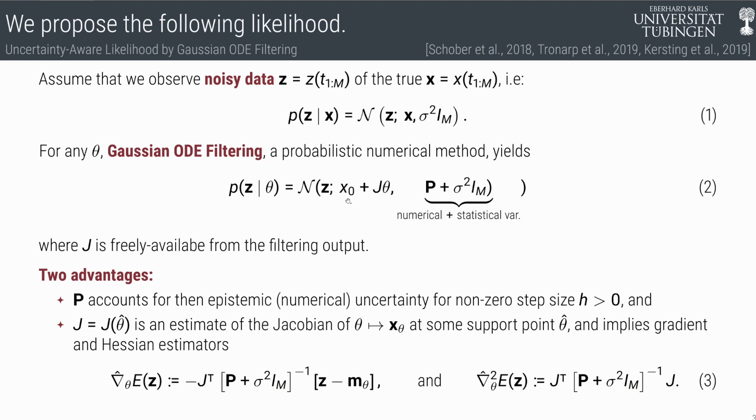Then there is the mean, which is x₀ plus J·θ, where J is just an estimate of the Jacobian of your forward map, θ to x_θ, around some support point around which we develop. Kind of like a Taylor expansion.